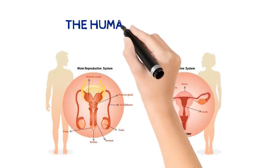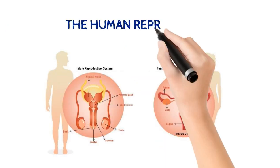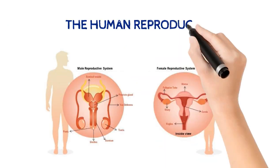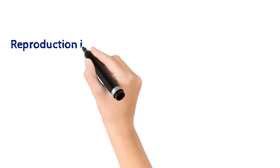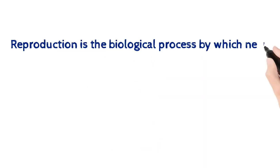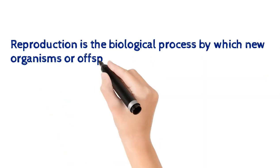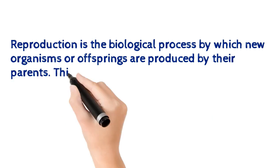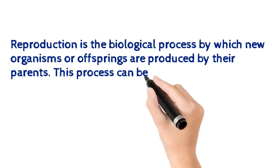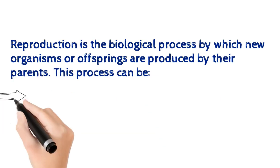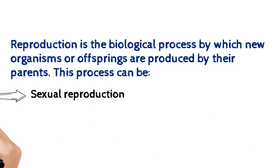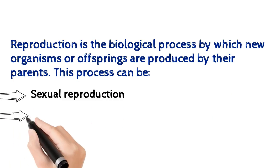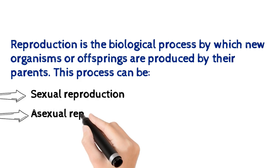The human reproductive system. Reproduction is the biological process by which new organisms, or rather offspring, are produced by their parents. This process can either be sexual reproduction or asexual reproduction.